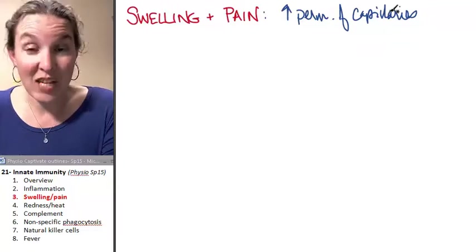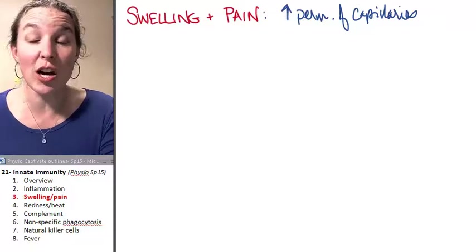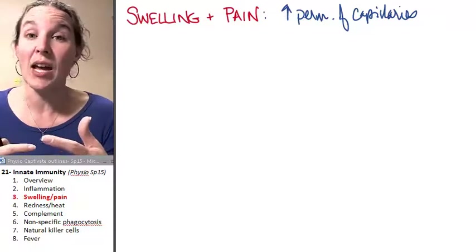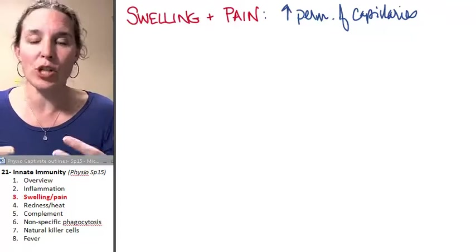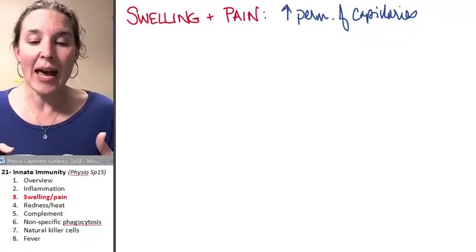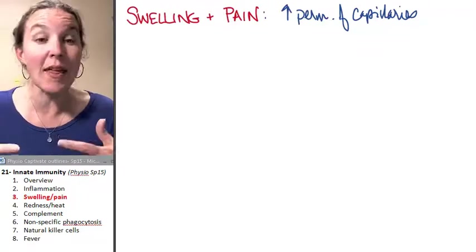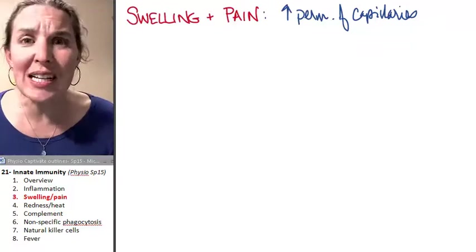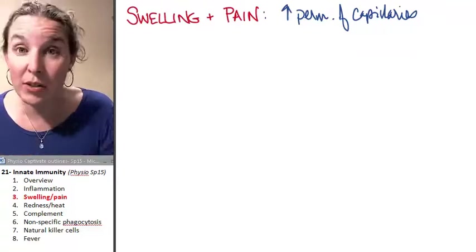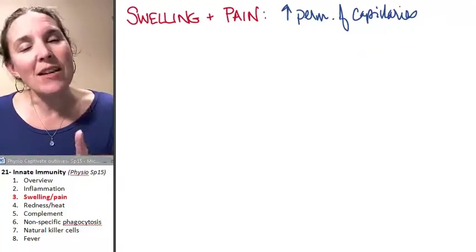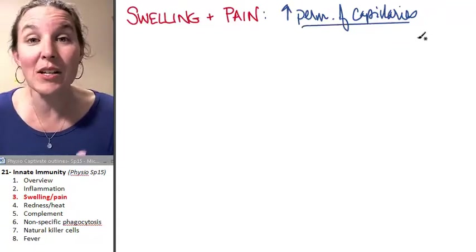We've spent a significant amount of time talking about capillary permeability. We spent an entire lecture talking about capillary exchange. One of the major mechanisms there was hydrostatic pressure pushing fluid out of the capillaries and osmotic pressure pulling fluid back into the capillaries. In our kidneys, we had a great deal of hydrostatic pressure pushing fluid out of the glomerular capillaries. Inflammatory cytokines cause increased permeability of the capillaries in the tissues.